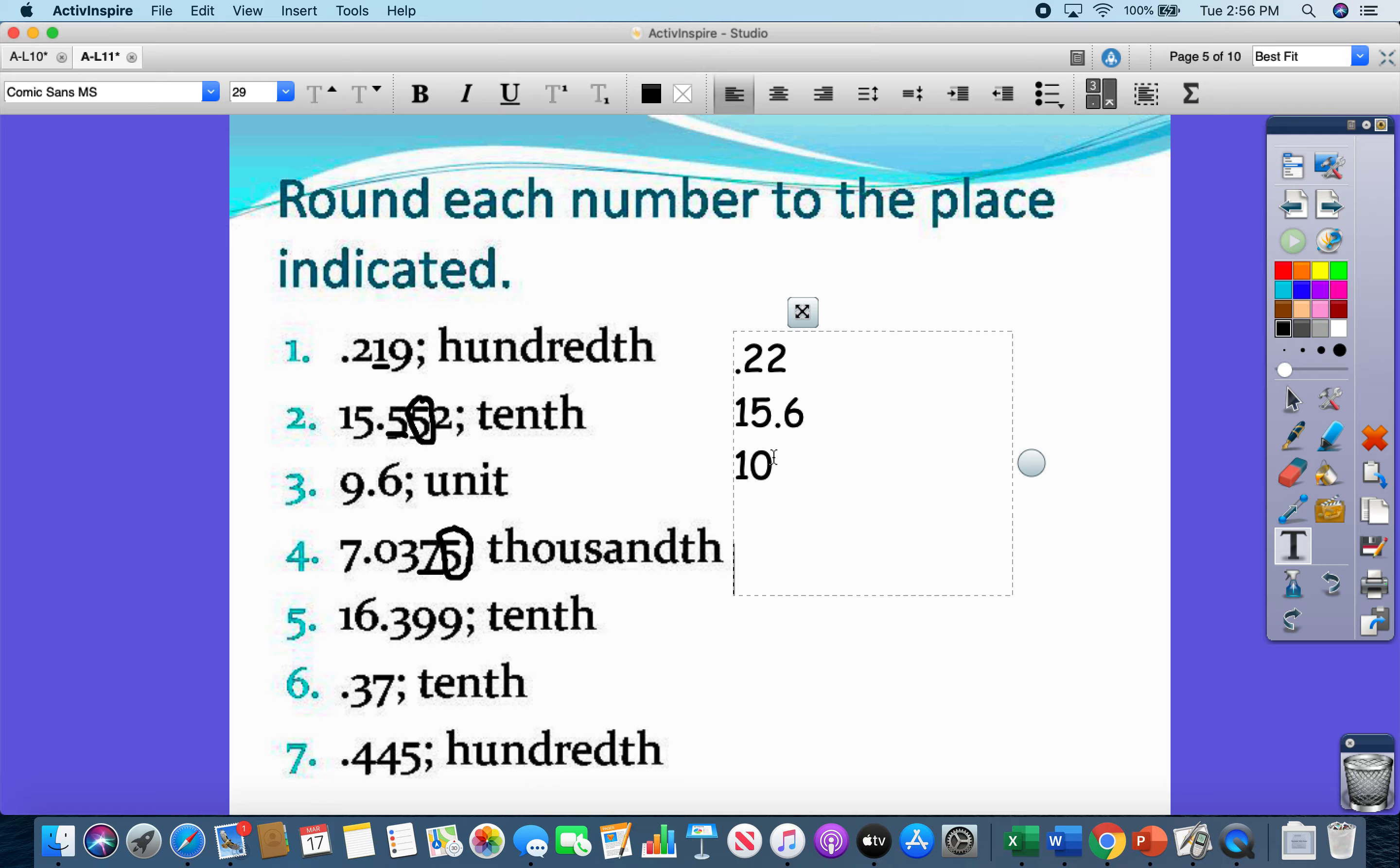Okay. So that means I'm going to change that 7 to the next number, which is 7 and 38 thousandths. See how I just changed it from 37, because it rounded up, it went from 37 to 38.